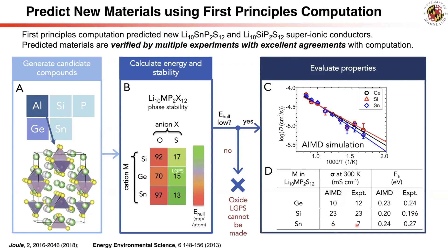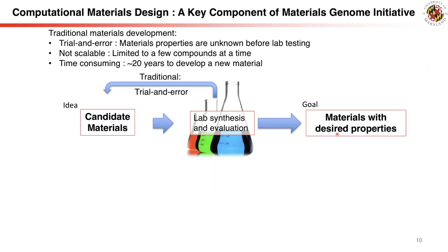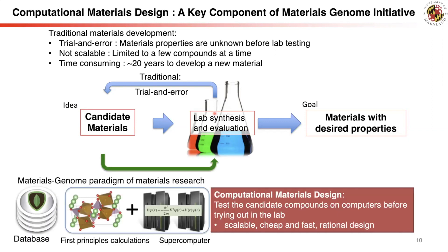This study is a successful demonstration of computationally predictive design of new materials. Designing and predicting new materials in computation has a big advantage. Traditional materials design involves a time-consuming trial-and-error process in the laboratory, trying different material combinations until successful. Using computation, new materials can be screened in computers, which is highly scalable — a large number of materials can be screened and lab trials can focus on the most promising candidates, greatly accelerating the discovery of new materials.